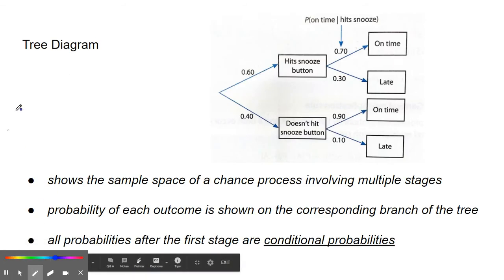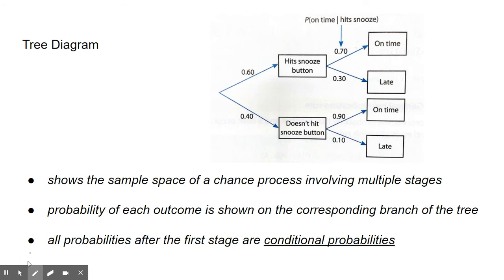So to do these, we're going to use what are called tree diagrams. So because you're honors, I want to show you what a tree diagram is. When you use a tree diagram, what you're doing is you're showing a sample space for a chance process involving multiple stages. So a first event and a second event.